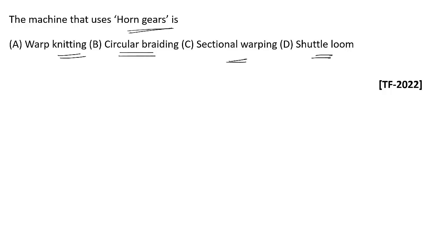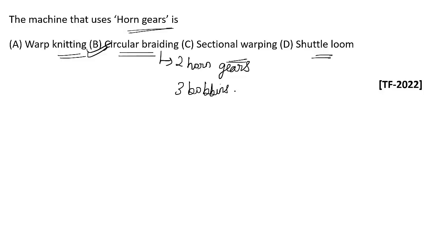Regarding horn gears: they are used in circular braiding machines. The horn gear is a part of the circular braiding machine, which consists of two horn gears and three bobbins. You should remember the parts of machines, their individual functions, basic roles, important parts and their functions — these types of conceptual questions are frequently asked in recent GATE Textiles examinations, which check deep-level understanding.